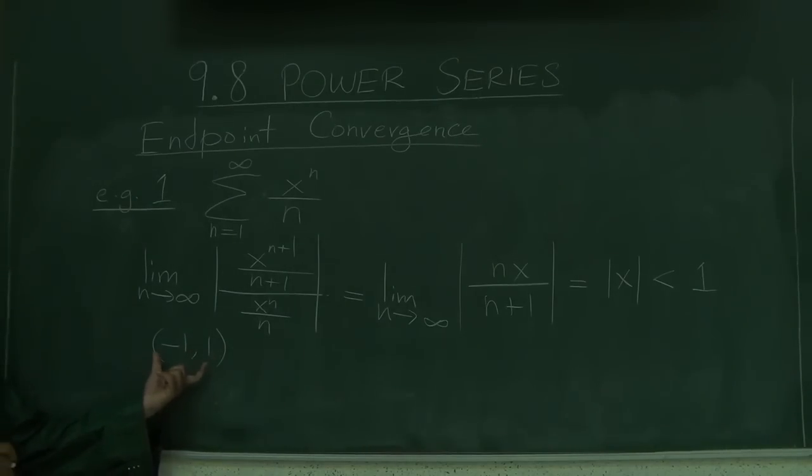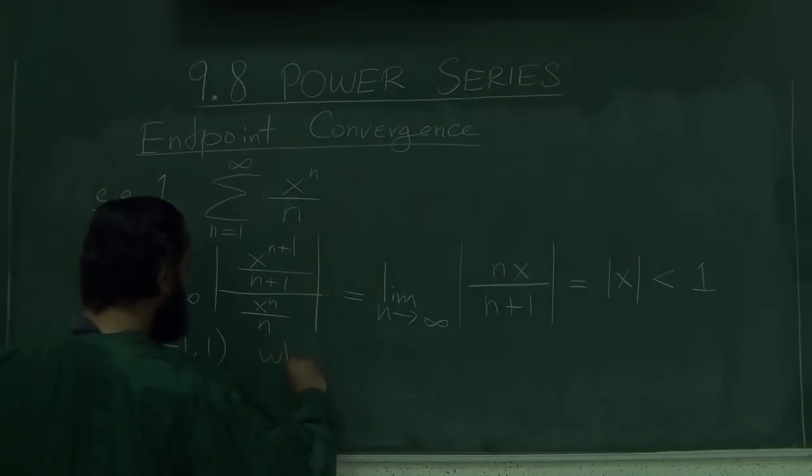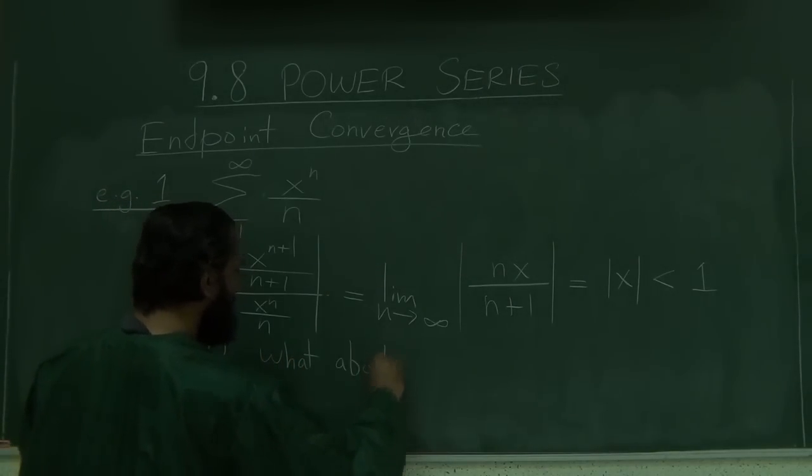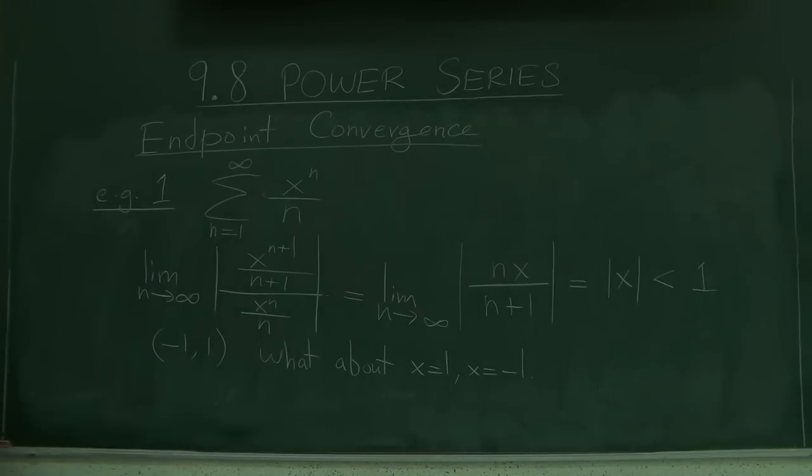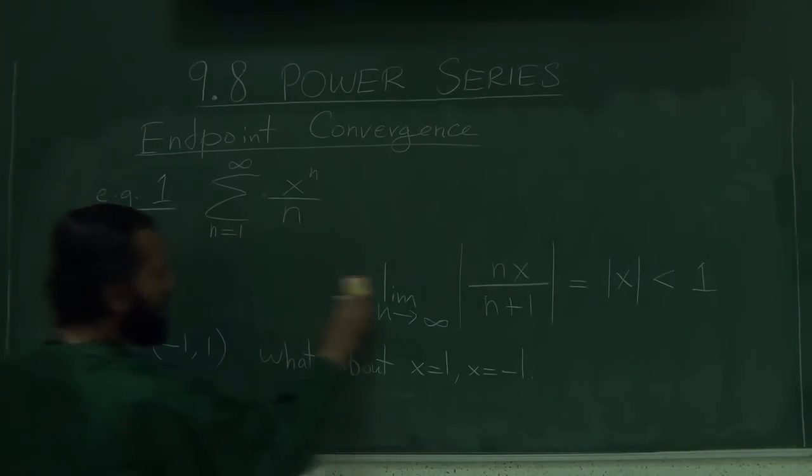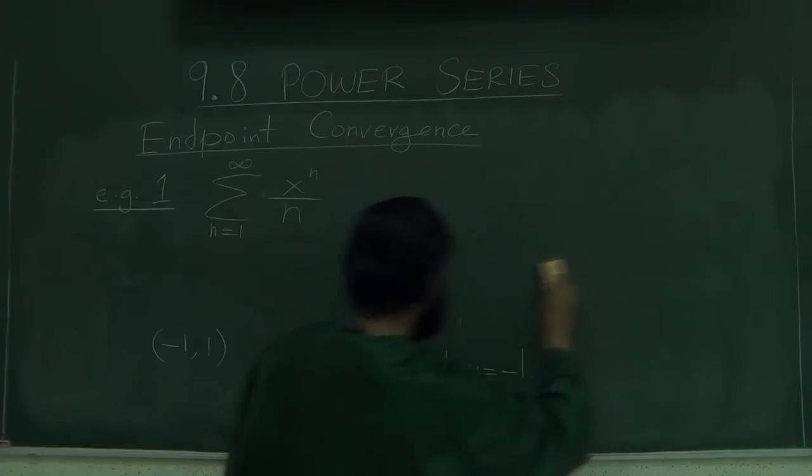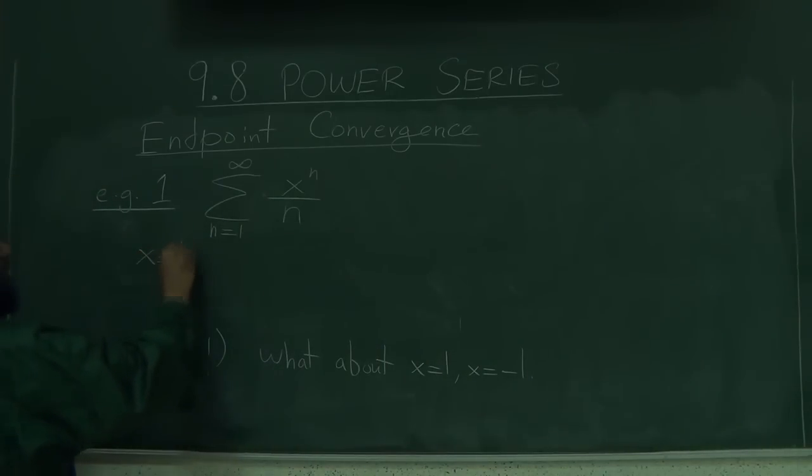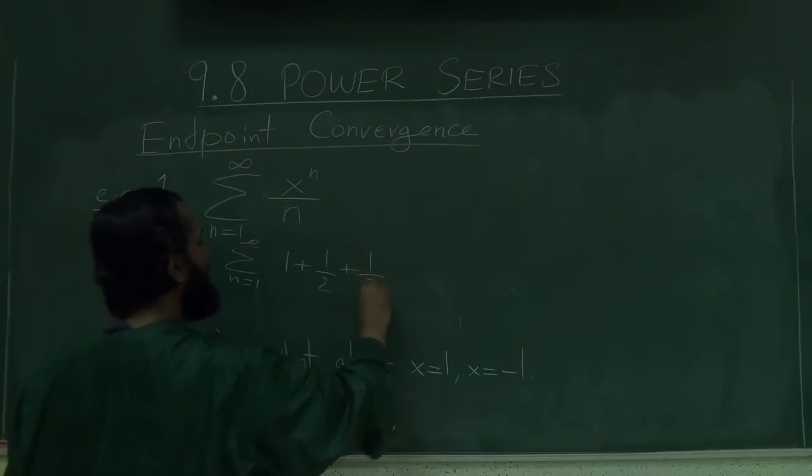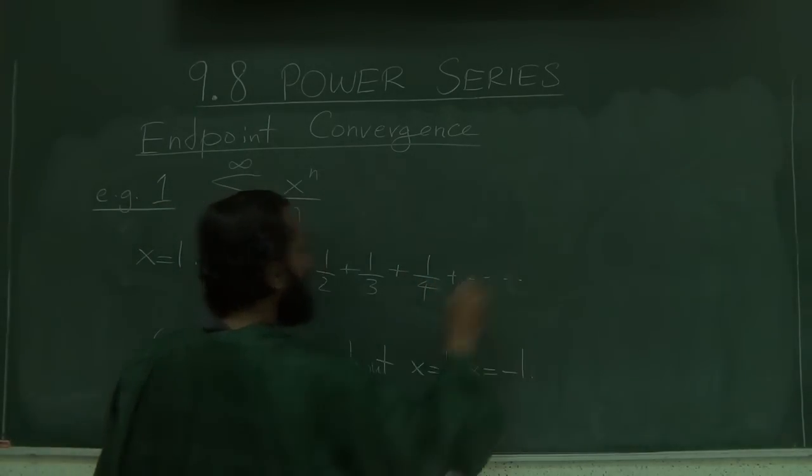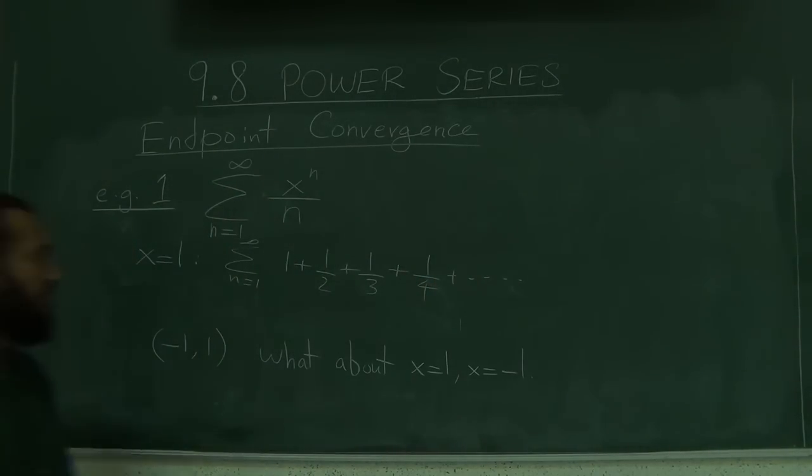But then the question is, what about the endpoints? What about x equals 1 and x equals negative 1? So when x equals 1, what does this series become? This is the harmonic series, which diverges.